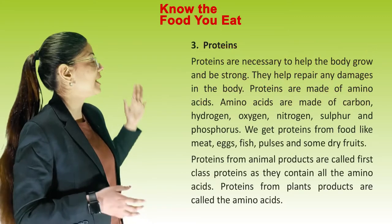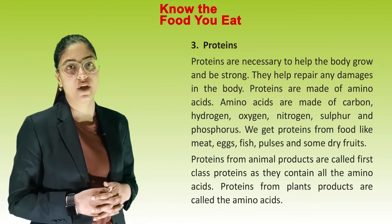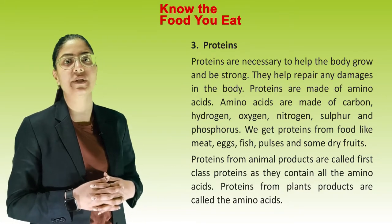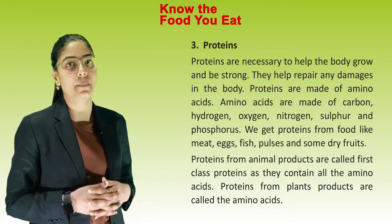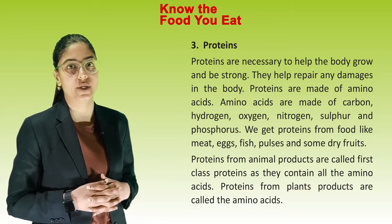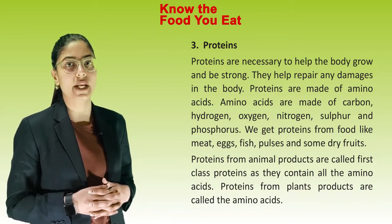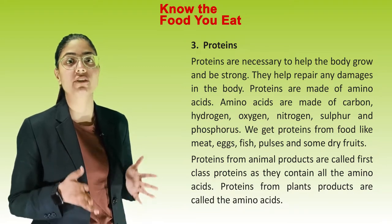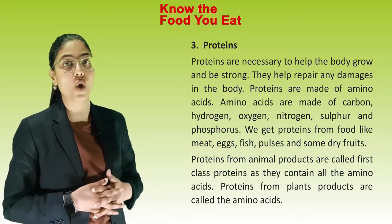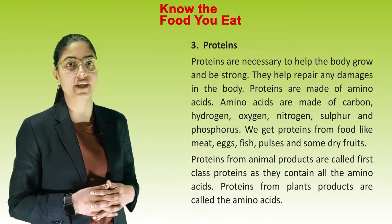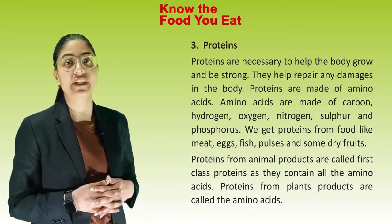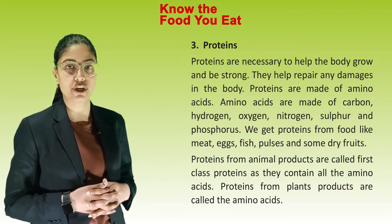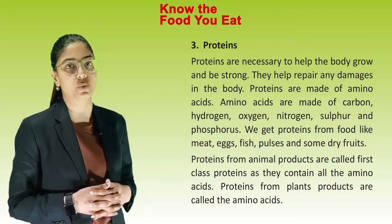Third one is proteins. Proteins are necessary to help the body grow and be strong. They help repair any damage in the body. Proteins are made up of amino acids. Amino acids are made up of carbon, hydrogen, oxygen, nitrogen, sulfur and phosphorus. We need proteins from food like meat, eggs, fish, pulses and some dry fruits.